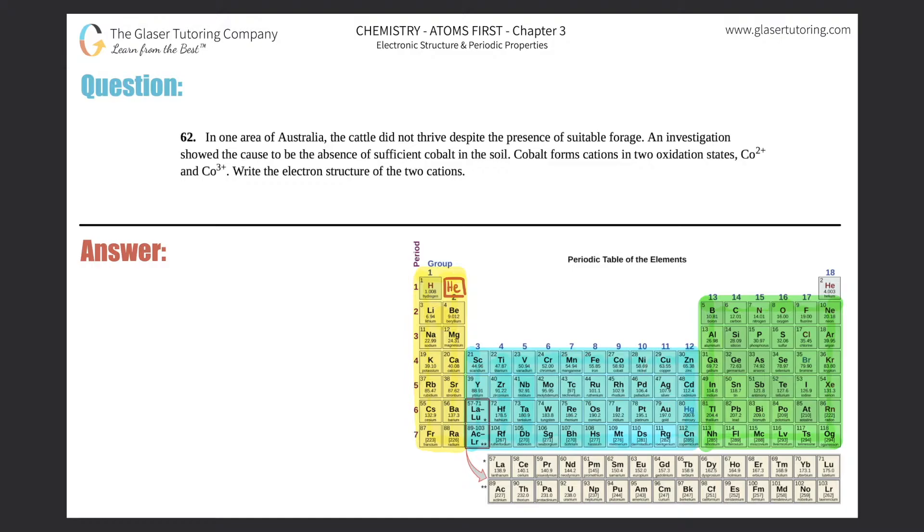Number 62. In one area of Australia, the cattle did not thrive despite the presence of suitable forage. An investigation showed the cause to be the absence of sufficient cobalt in the soil. Cobalt forms cations in two oxidation states, CO²⁺ and CO³⁺. Write the electronic structure of the two cations.